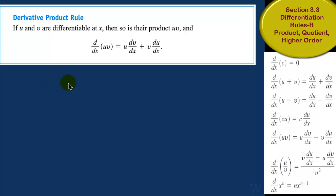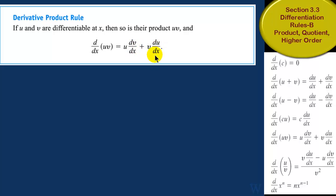What about the product rule? Let's look at the definition first. You have two functions that are differentiable. If you take the derivative of the product of u and v, it's equal to u times the derivative of v plus v times the derivative of u.